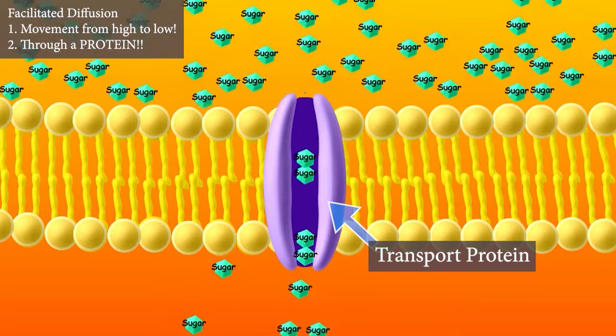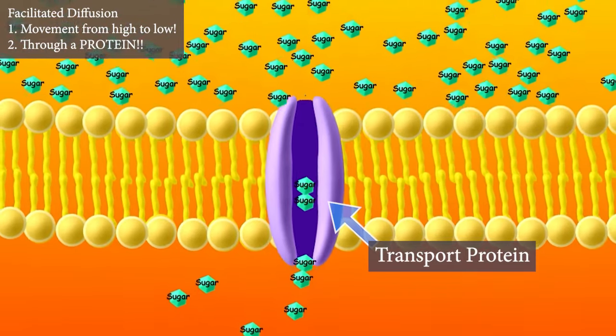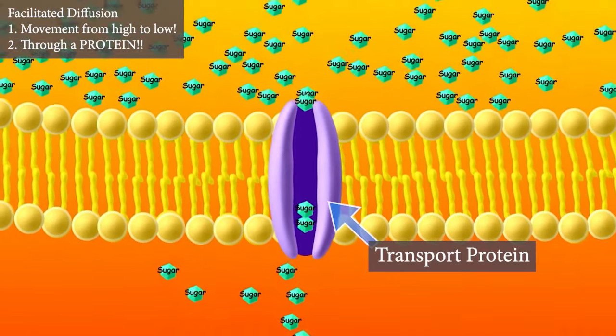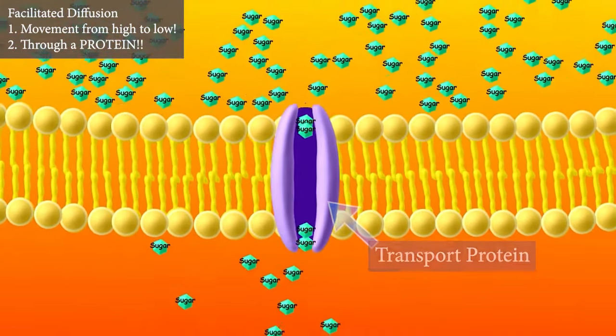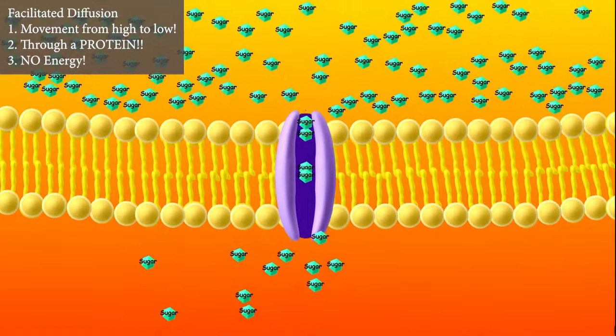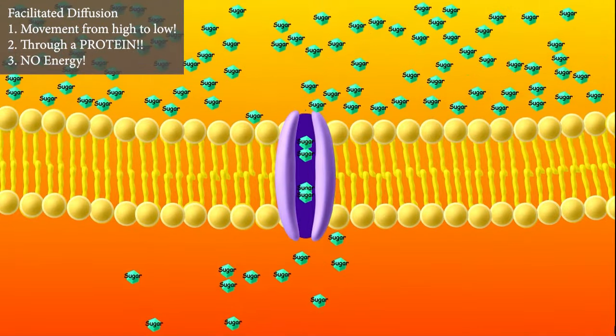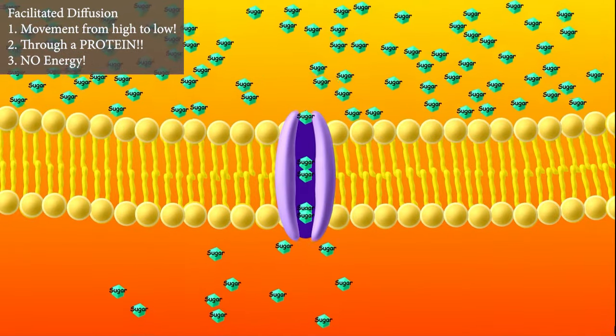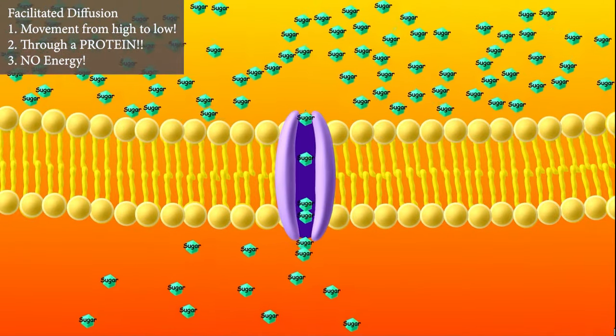Since movement is still from high to low concentration, no energy is used by the cell to make facilitated diffusion happen. It is totally passive.